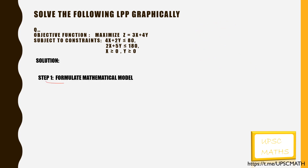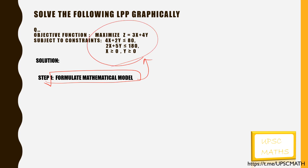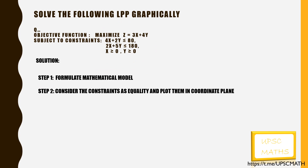Step 1 is to formulate the mathematical model. We don't have to do this step for this sum since the question is already expressed in mathematical model form, so we will skip this step. Then we have to consider the given constraints as equality and plot them on the coordinate plane. We have two constraints: 4x plus 2y less than or equal to 80, and 2x plus 5y less than or equal to 180.